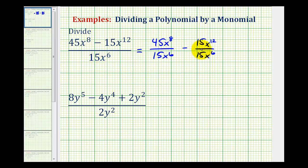And now we simplify each of these fractions. 45 divided by 15 would be three. And then for x to the eighth divided by x to the sixth, since we're dividing and the bases are the same, we subtract the exponents. So we'd have x to the power of eight minus six, which is two.